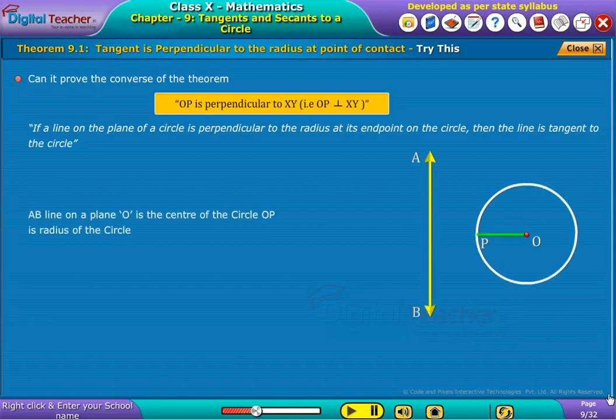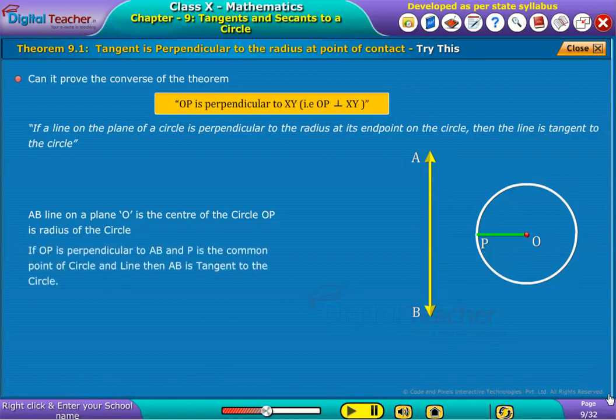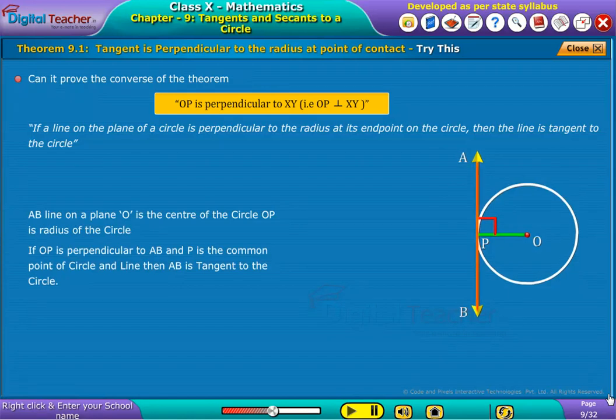To prove, take a line AB on a plane. OP is radius of the circle. If OP is perpendicular to AB and P is the common point of circle and line, then AB is tangent to the circle.